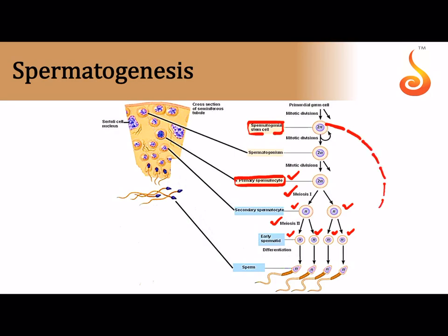The male germ cell has 46 chromosomes (2n = 46), whereas the spermatids formed are haploid (n = 23) because they are products of meiosis. Meiosis happens in two stages: meiosis I and meiosis II. The spermatogonial cell is also called the immature male germ cell, and from one immature male germ cell we get four spermatids. The ratio to remember is 1:4.